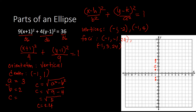Next, we identify the co-vertices. b is 2, so we count 2 units horizontally to the right and left from the center. Right: 1, 2 — co-vertex here. Left: 1, 2 — co-vertex here. Coordinates: (negative 3, 1) and (1, 1). Now drawing our ellipse by connecting the vertices and co-vertices — this is our ellipse.